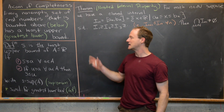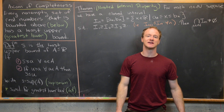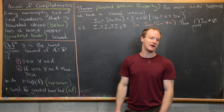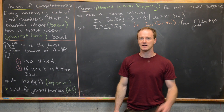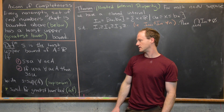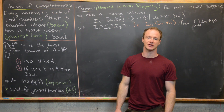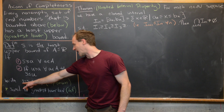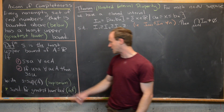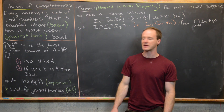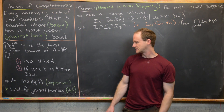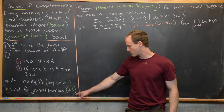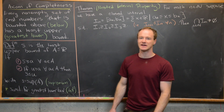You can have a completely analogous definition for a greatest lower bound — I'll leave that as an exercise. Some notation we often use: S equals the sup of A, meaning the supremum of A. And in the case of the greatest lower bound, we use the word infimum, sometimes shortened to inf.